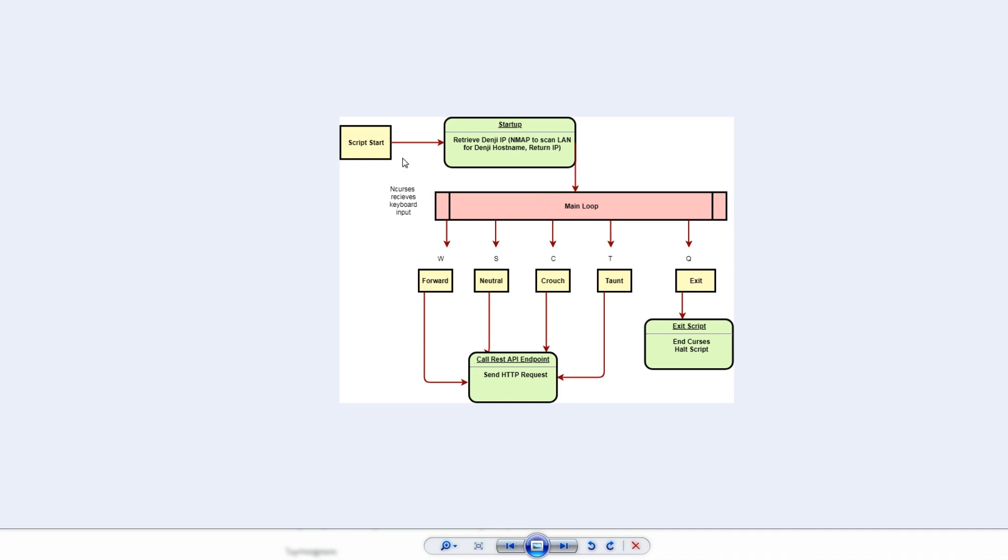So after that's done, endCurses starts. This is sort of your infinite loop of just waiting for input. So I've defined different keys to kick off different requests. So for example, if I hit W, that will call the /step endpoint and it will actually make Denji take a step forward.